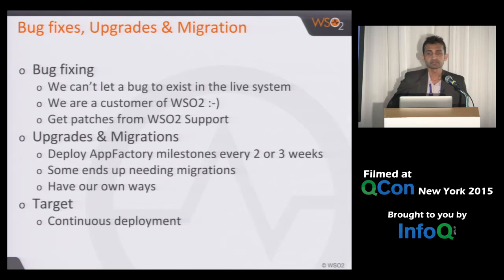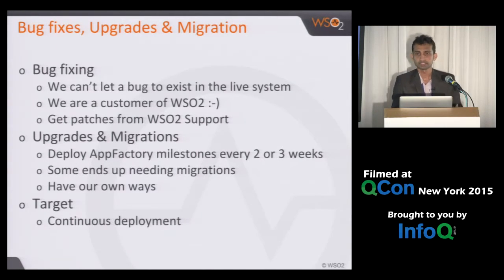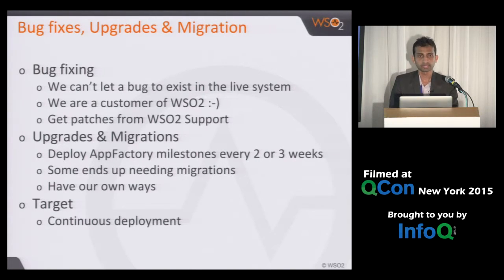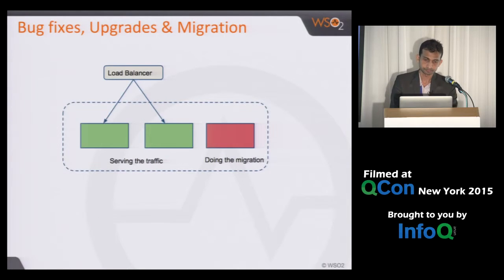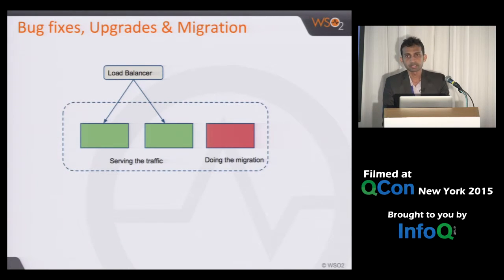Our target is to do continuous deployment. We're planning to practice the same thing with the API Manager product for the API Cloud, and eventually deploy nightly builds to the deployment, but we're not there yet. Recently, we upgraded from API Manager 1.7 to 1.8. That involved a huge migration because they had changed the Swagger version used in the API Manager product — Swagger is used for API documentation purposes.